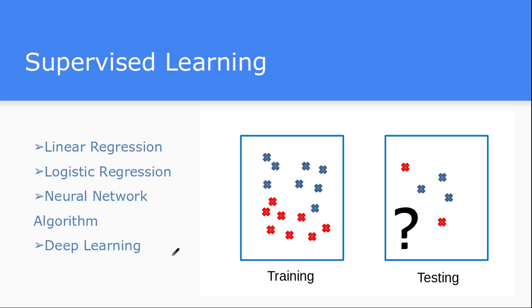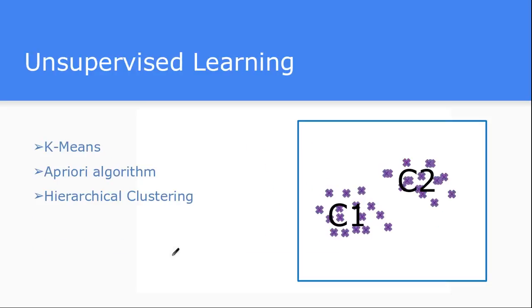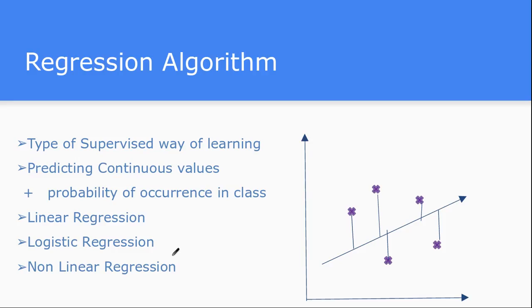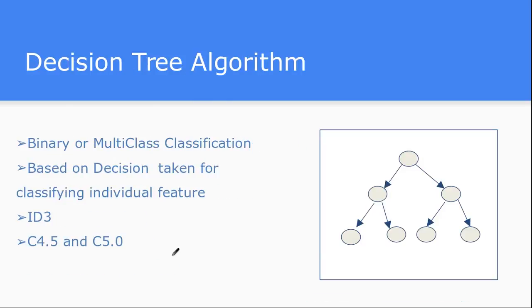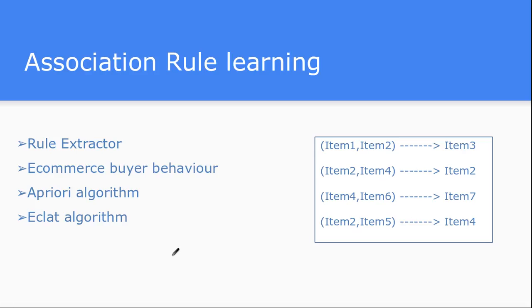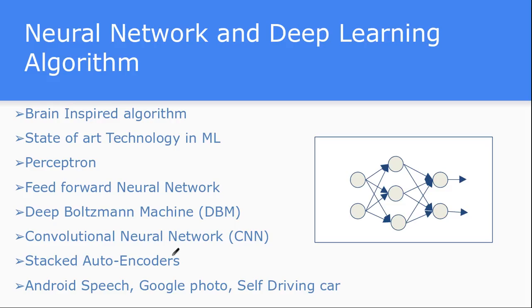We have already gone through supervised learning, unsupervised learning, regression algorithms, decision tree algorithms, and we discussed about association rule mining. Now let's start about the neural network and deep learning algorithms.